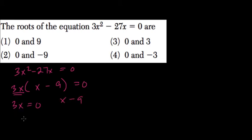If 3x is zero, divide both sides by 3, and x is equal to zero. If x minus 9 equals zero, add 9 to both sides, and x equals 9. Those are our two roots, zero and nine.